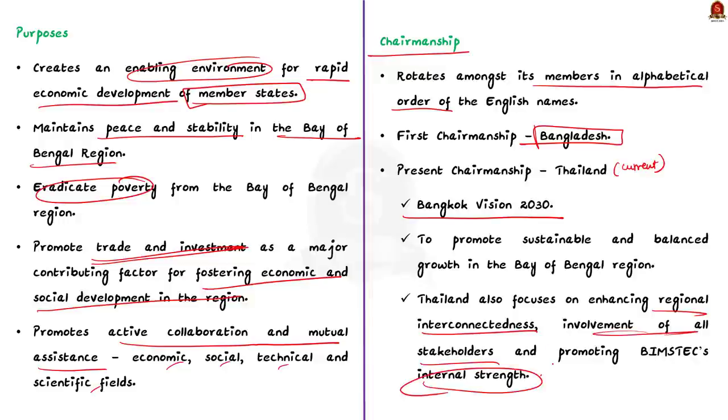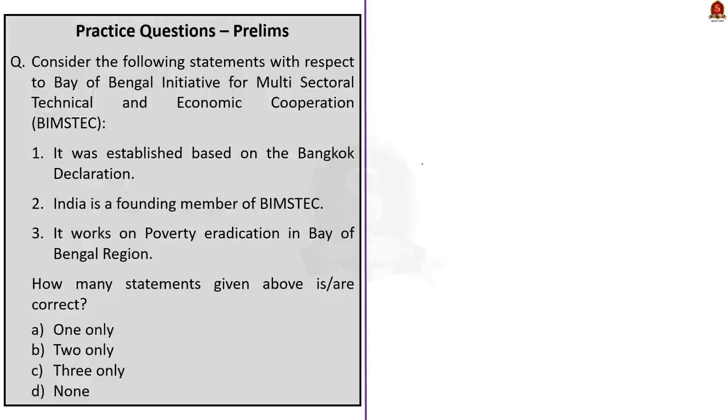Moving on to the chairmanship of BIMSTEC. It rotates among its member states in alphabetical order based on their English names. Bangladesh had the first chairmanship and currently, Thailand holds the chairmanship. Thailand has proposed the Bangkok Vision 2030 which is the document that outlines the direction and goals for the organization. This is what this news article was also talking about. It focuses on sustainable and balanced growth, enhancing regional interconnectedness, thereby involving all stakeholders and strengthening BIMSTEC internally. To summarize, BIMSTEC is a regional organization comprising seven member states. It was established through Bangkok's declaration in 1997.